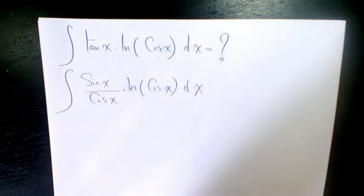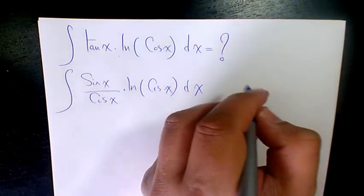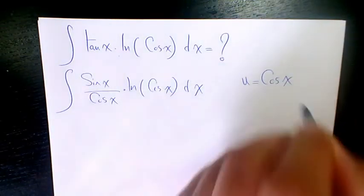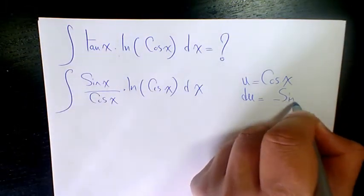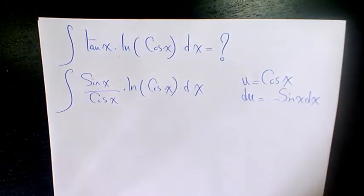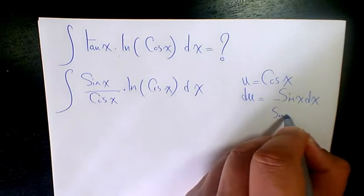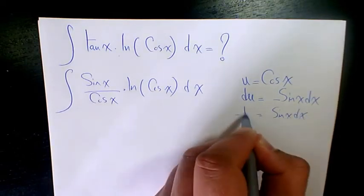I'm going to use the substitution method and define u as cosine x. So du, which is the derivative of u, will be negative sine x dx. Or we can say sine x dx will be negative du.